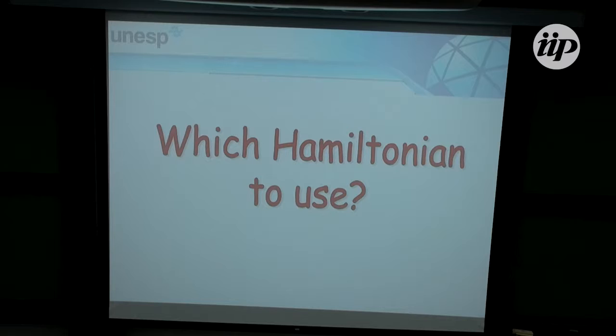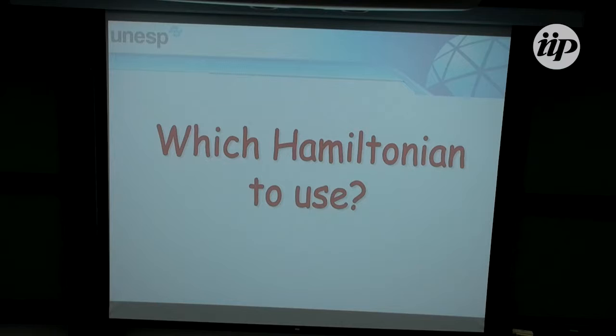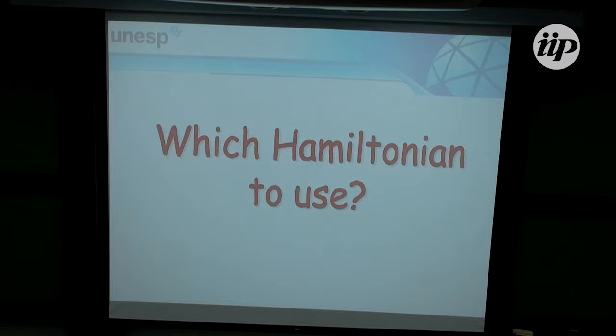What we need is a single-particle Hamiltonian that responds to charge distributions and to the application of a bias. There is a framework where everything boils down to a Hamiltonian that depends on the density. Since I have a Green's function that describes the non-equilibrium density, if I know how to calculate this non-equilibrium density, I can plug it back into the Hamiltonian and do a self-consistent calculation. There is a theory for that, known as density functional theory.